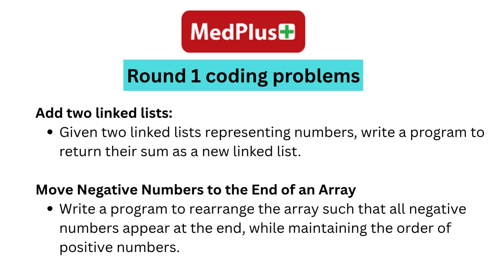Add two linked lists: given two linked lists representing numbers, write a program to return their sum as a new linked list. Move negative numbers to the end of an array: write a program to rearrange the array such that all negative numbers appear at the end, while maintaining the order of positive numbers.